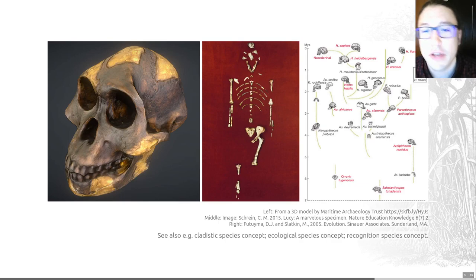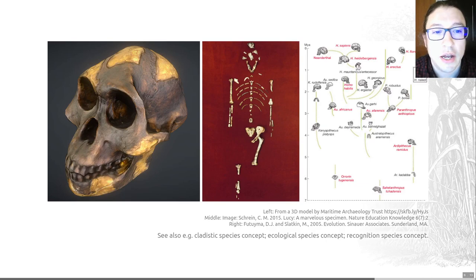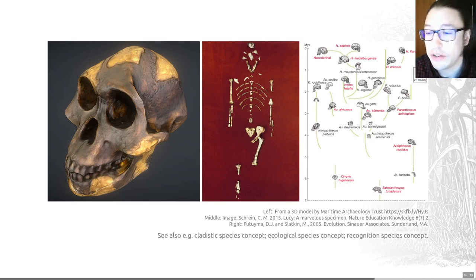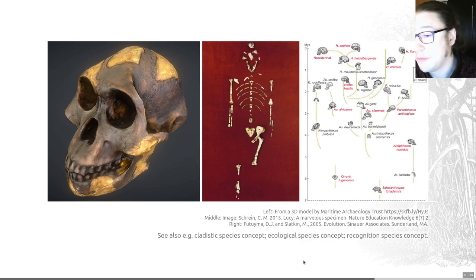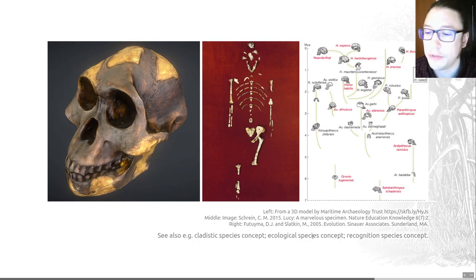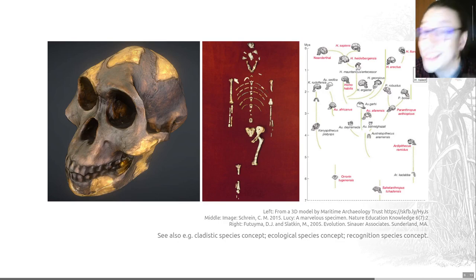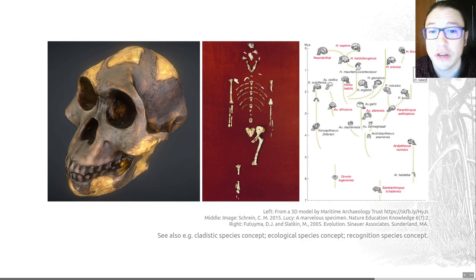Nevertheless, this is the best we have to identify species in the fossil record. And those are just two of the possible ways that we can define species. I've put a couple more — three in fact — the cladistic species concept, ecological species concept, and recognition species concept on the bottom here, should you wish to research them further. I think it's a really, really interesting question. And we're going to finish in our last video by looking at how species form, so I will see you there very shortly.